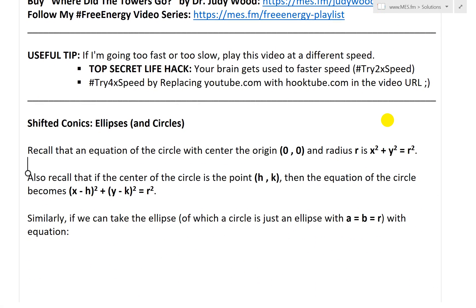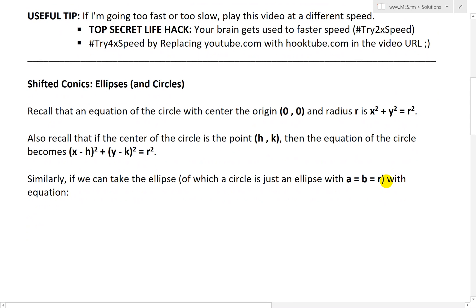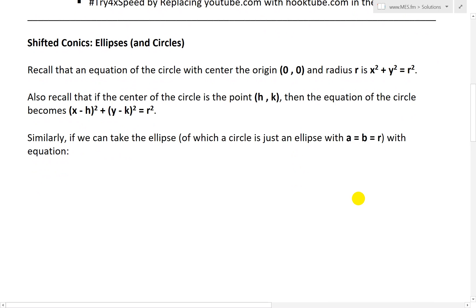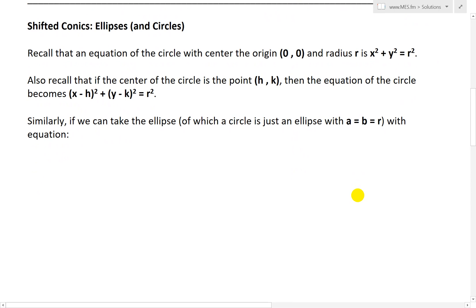Recall that an equation of the circle with center at the origin, or at (0, 0), and radius r is just x squared plus y squared equals r squared. You can see my earlier videos on the circle. I also recall that if the center of the circle is the point h and k, then the equation of the circle becomes x minus h all squared plus y minus k all squared equals r squared. In other words, the x and y get replaced with x minus h and y minus k.